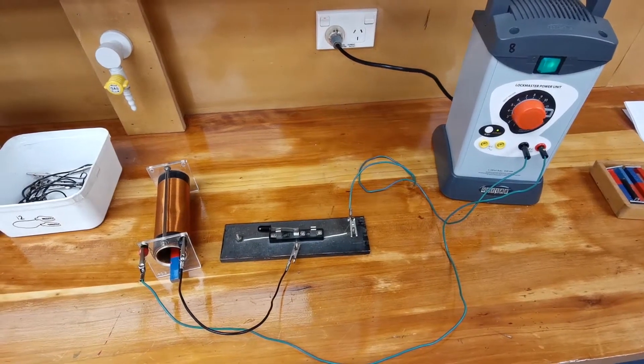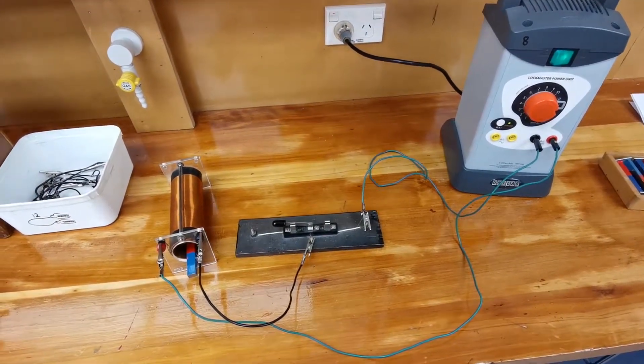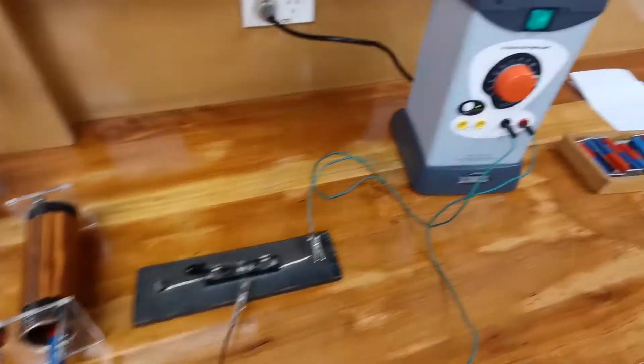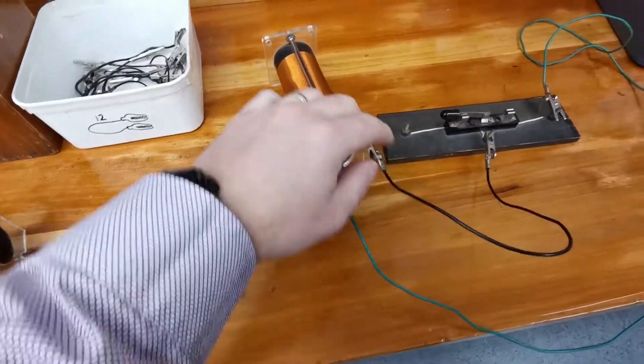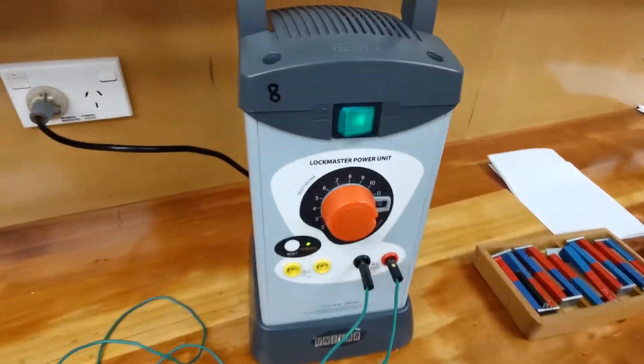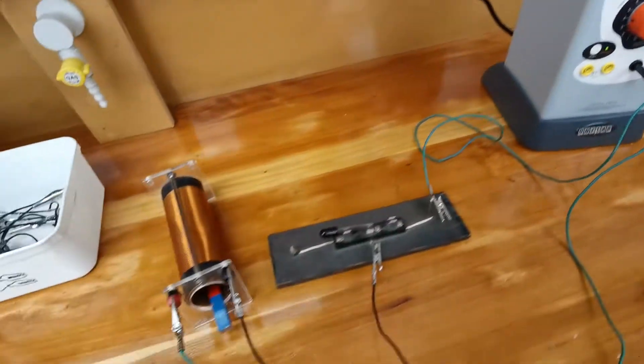Here's an experiment for learning the right-hand rule for solenoids. I've got a power supply going into a solenoid, into a switch, and back into the power supply, running at about 12 volts.